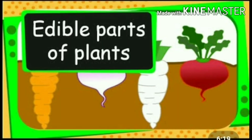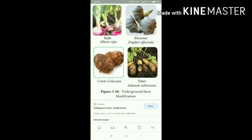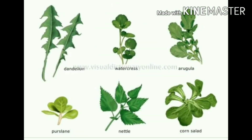For tabulating more examples in this table, you just watch the video and write more and more examples in each column. In the column of root, you just write tapioca, sweet potato, beetroot, carrot, radish. In the column of leaf, you write amaranthus, cabbage, moringa, pumpkin, coriander.